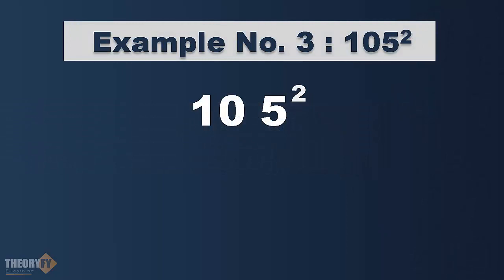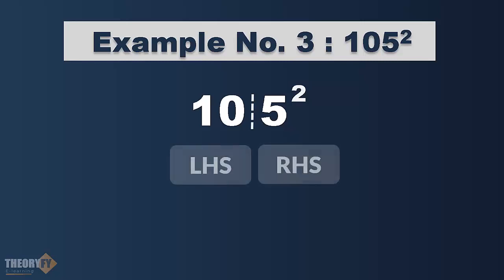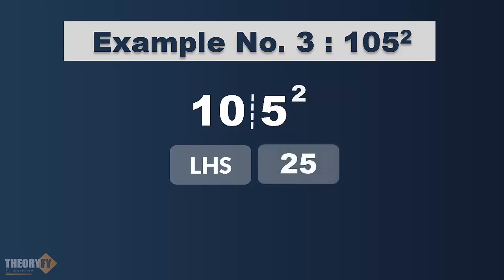Now we are going to find the square of 105 — a bigger number. First split the number, keeping 5 aside. RHS will always be 25. Now to solve LHS, multiply 10 with its next number, which is 11. So 10 times 11 is 110, and that's our answer: 11025.